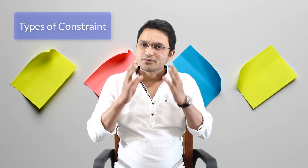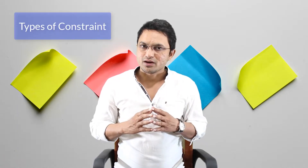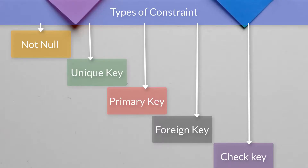Now let's discuss the types of constraints available in Oracle Database. As you can see on the screen, the types are: first, NOT NULL constraint; second, Unique Key constraint; third, Primary Key constraint; fourth, Foreign Key constraint; and finally, Check constraint. These are the five types of constraints available in Oracle Database.